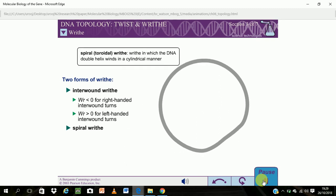The other form of writhe is spiral or toroidal writhe. In spiral writhe, the DNA winds as if around a cylinder. Spiral writhe often occurs when DNA molecules wrap around proteins.